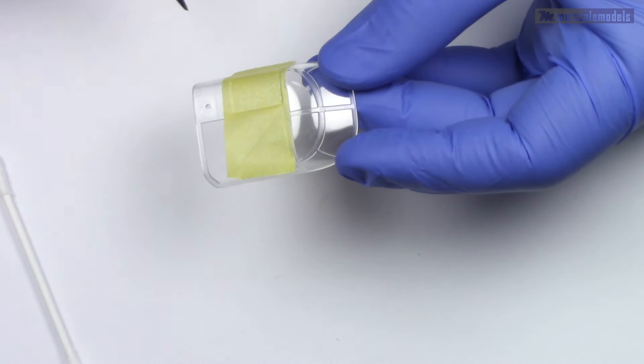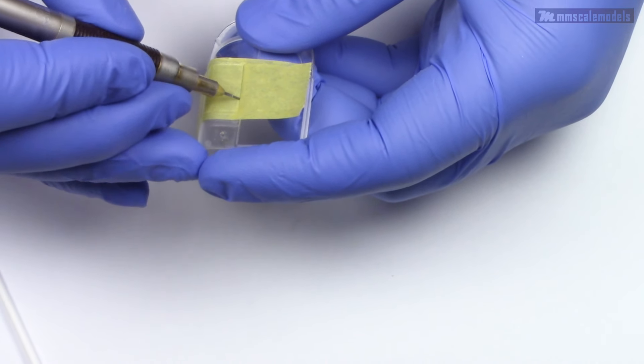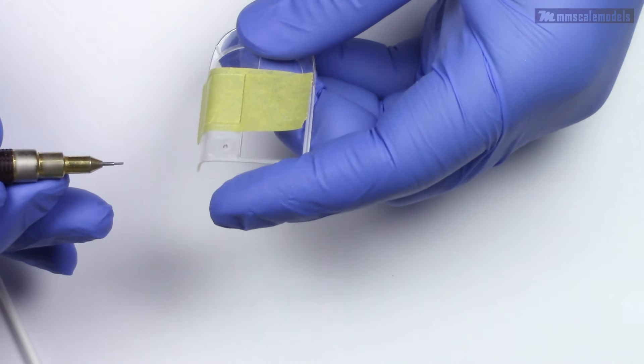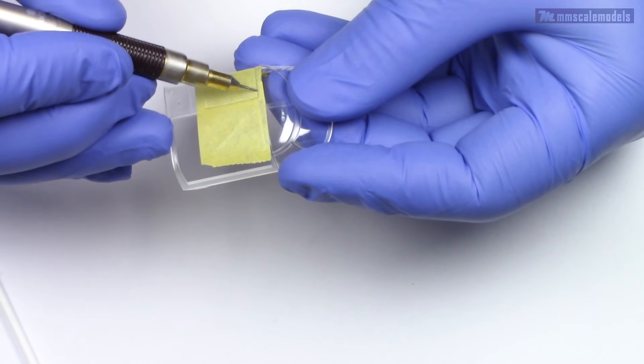Before you put your hobby blade on your clear part and start cutting, I suggest to lay down some guidelines to get a better idea what track your blade should follow. A sharp pencil is a good choice.